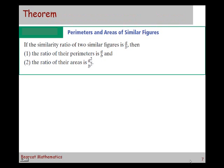Let me start right out with a theorem. It says if the similarity ratio of two similar figures is A over B, then one thing that's true is the ratio of their perimeters is also A over B. So if the scale ratio of two similar figures is 2 to 3, then their perimeter is also going to be in that same ratio, 2 to 3.